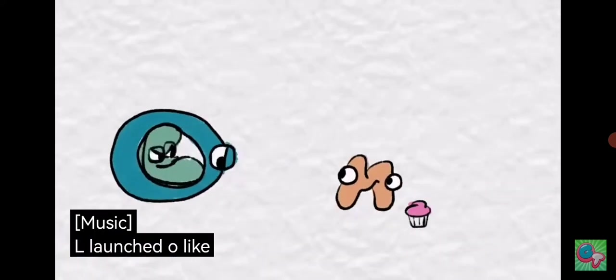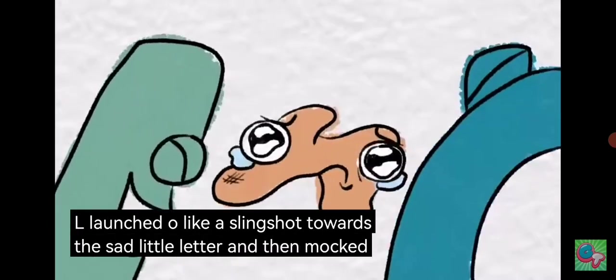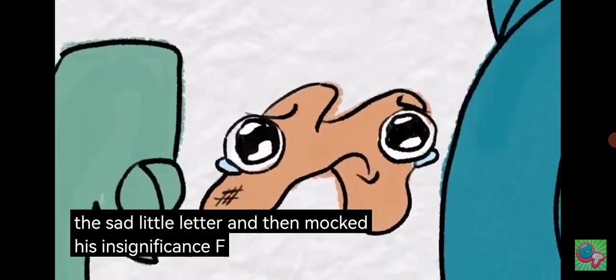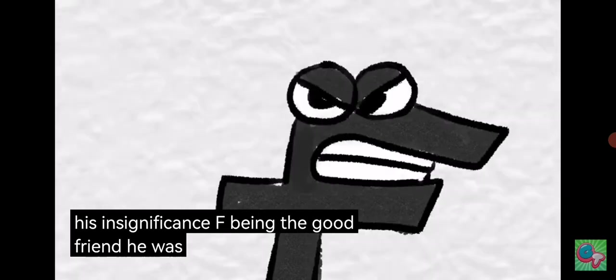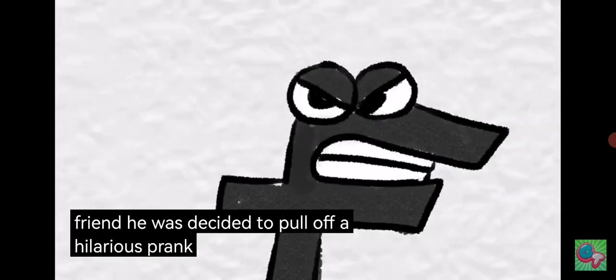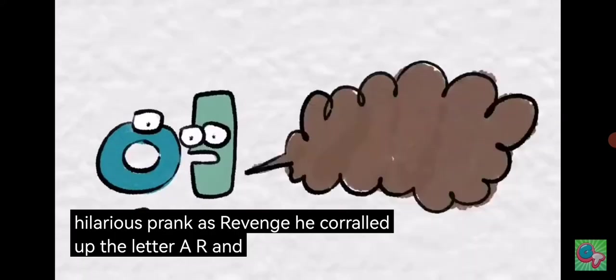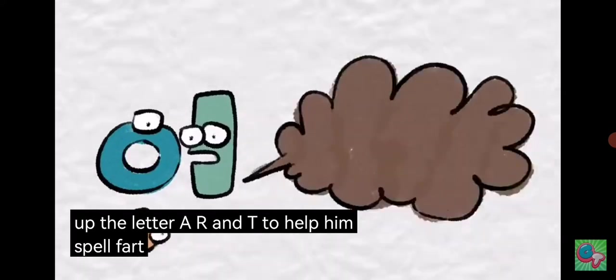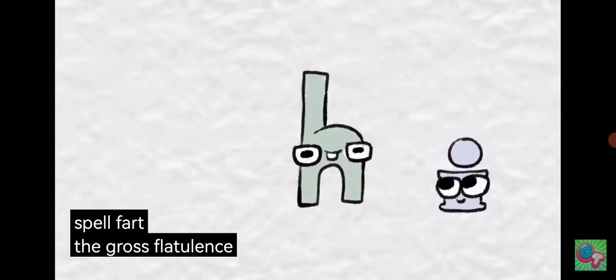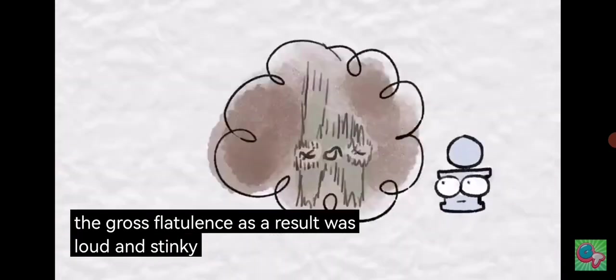L launched O like a slingshot towards the sad little letter, and then mocked his insignificance. F, being the good friend he was, decided to pull off a hilarious prank as revenge. He corralled up the letters A, R, and T to help him spell fart. The gross flatulence as a result was loud and stinky enough to be heard throughout the entire alphabet, even killing H.